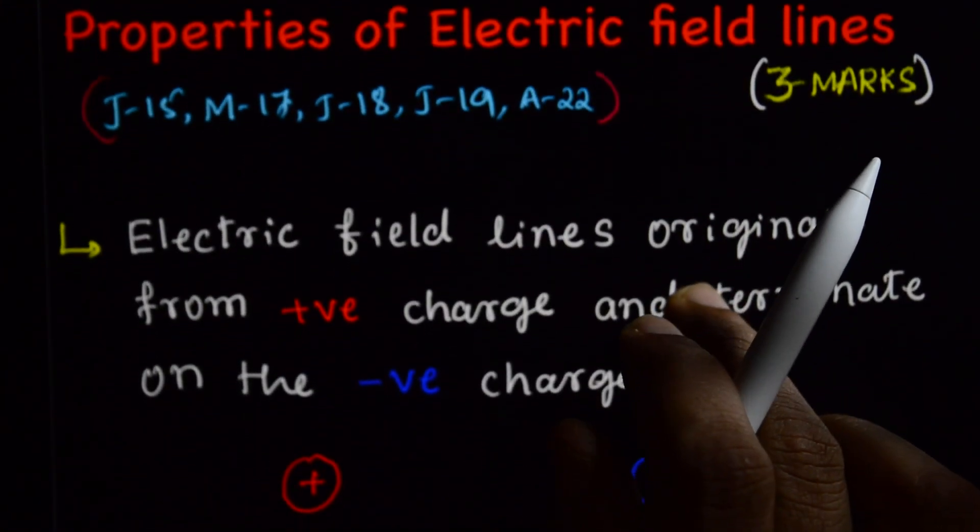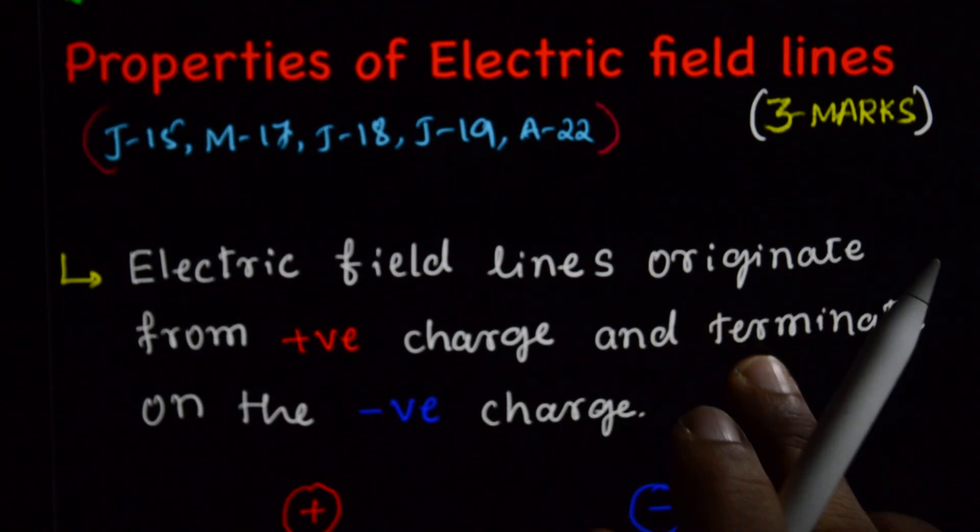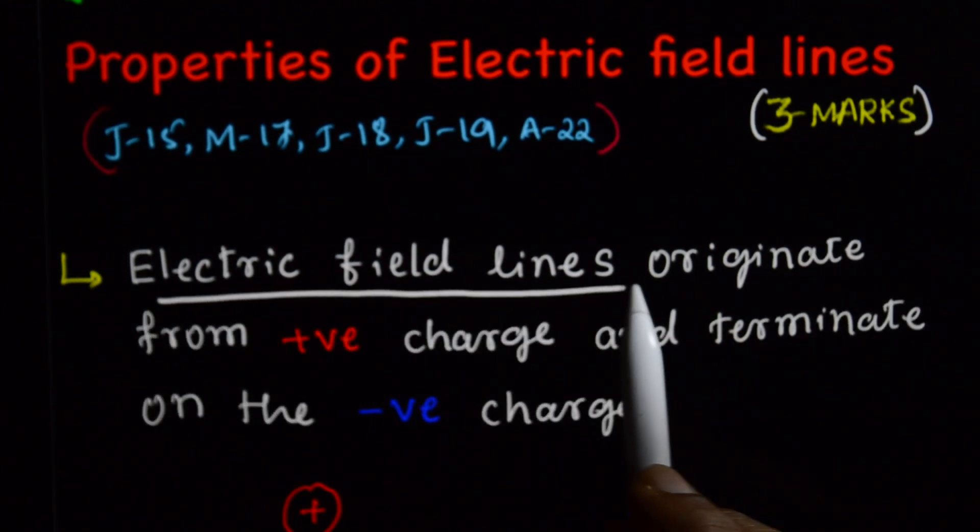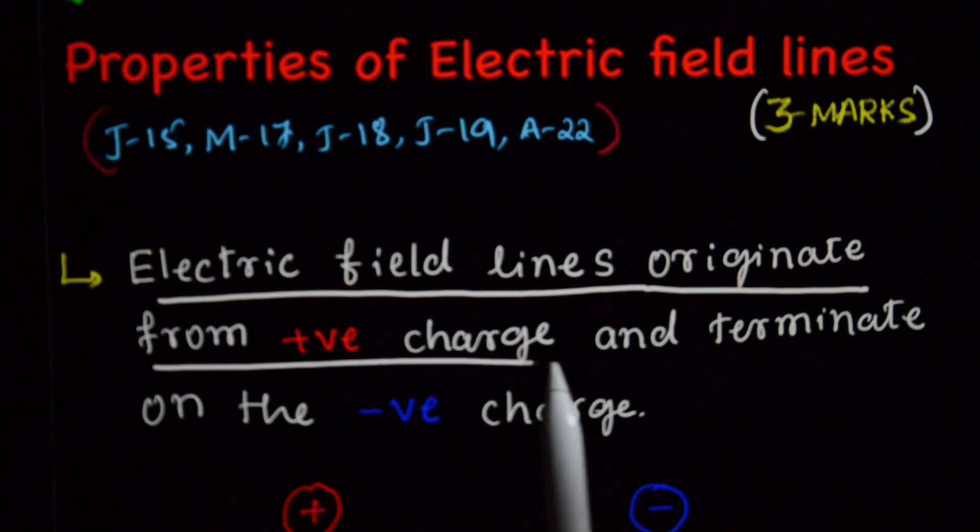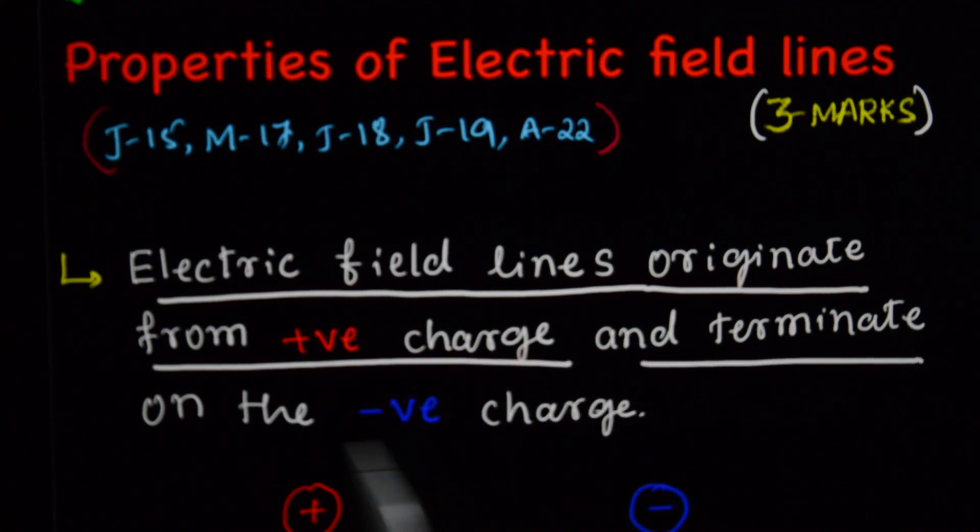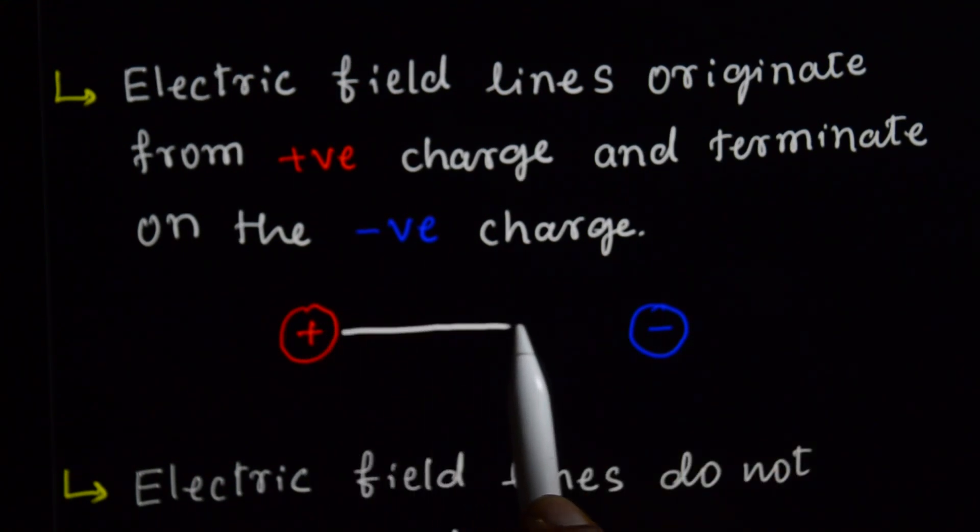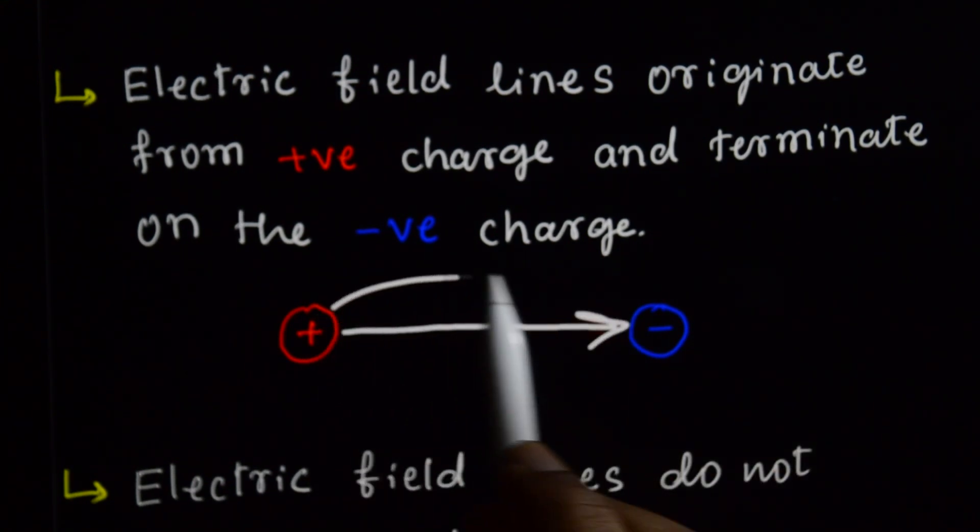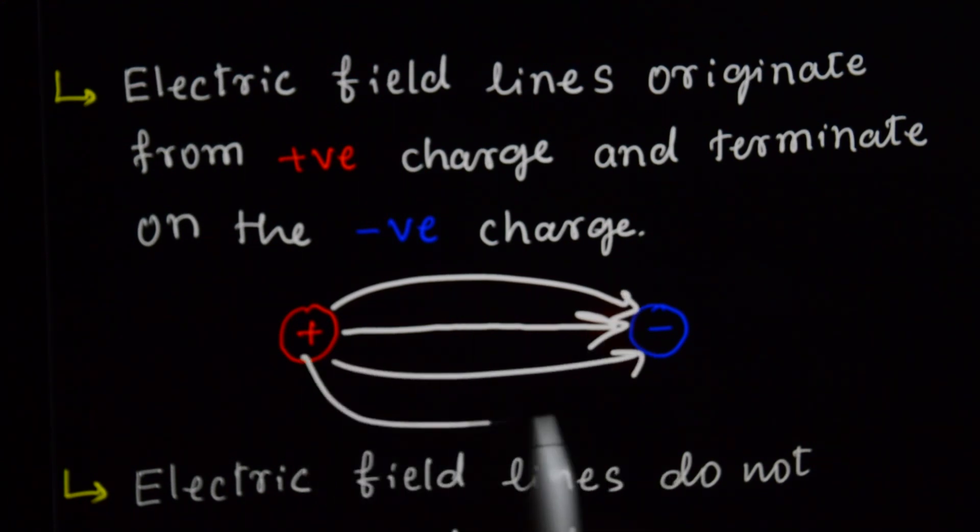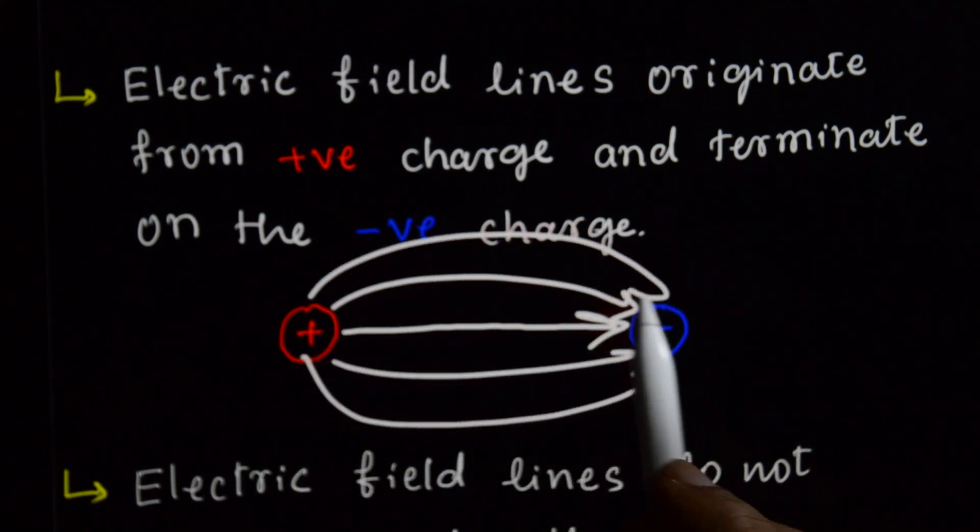And first property. Electric field lines originate from positive charge and terminate on the negative charge. They start from positive and end at negative charge. That is the first property of Electric Field Lines.